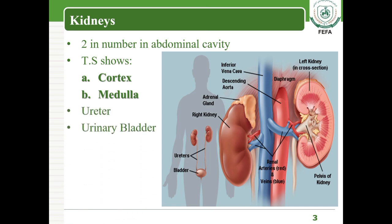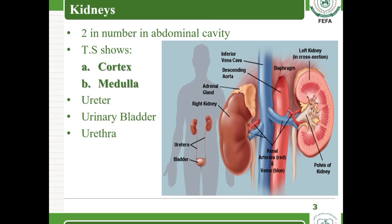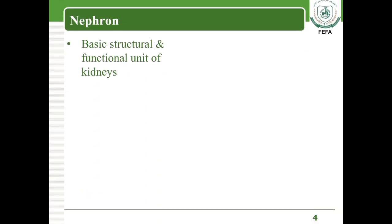The ureter is the portion of the excretory system that carries urine from the kidney to the urinary bladder. The urinary bladder is a bag-like or sac-like structure responsible for storing urine. The urethra is the structure through which urine passes to the outside environment.